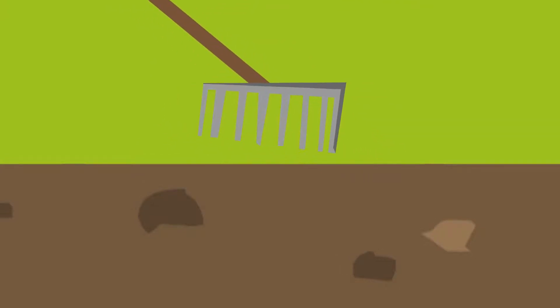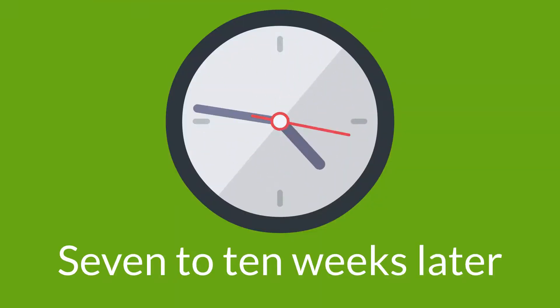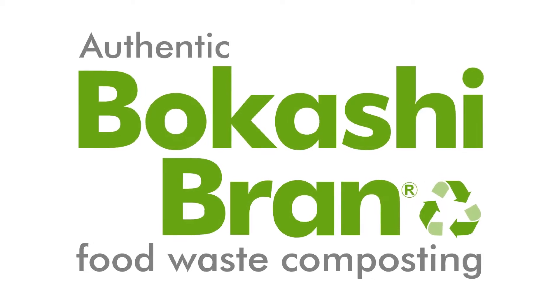Open a hole in a compost heap, add the bokashi-treated food waste, and then cover it up. Seven to ten weeks later, it will be ready to go back into the garden as healthy organic compost. Bokashi bran: food waste recycling to compost.